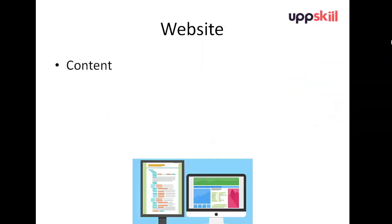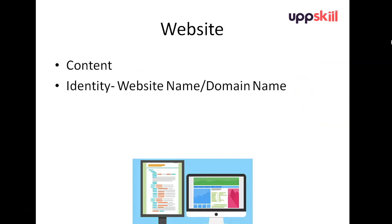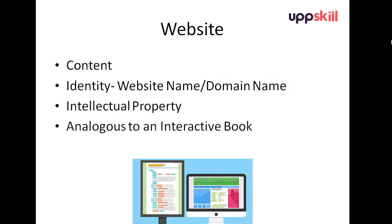What is a website? A website is a curation of content. It has an identity in the form of a website name, or a domain name — that is the URL of your website. It is an intellectual property that you own and it is analogous to an interactive book, because a book is basically a collection of content that could be textual content or some form of media such as images.